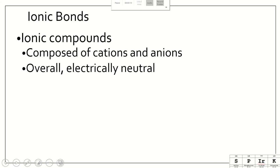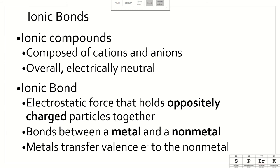Ionic compounds are composed of cations and anions. Remember that cations are positive, anions are negative, and overall they are electrically neutral, so they combine and balance each other out. An ionic bond is an electrostatic force that holds oppositely charged particles together. These are always bonds between a metal and a non-metal.